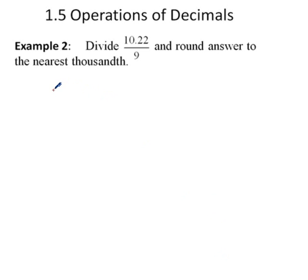Dividing once more by a whole number, they give us 10.22 and they want us to divide it by 9. Our dividend has a decimal in it right here, so our quotient will also have a decimal right there.